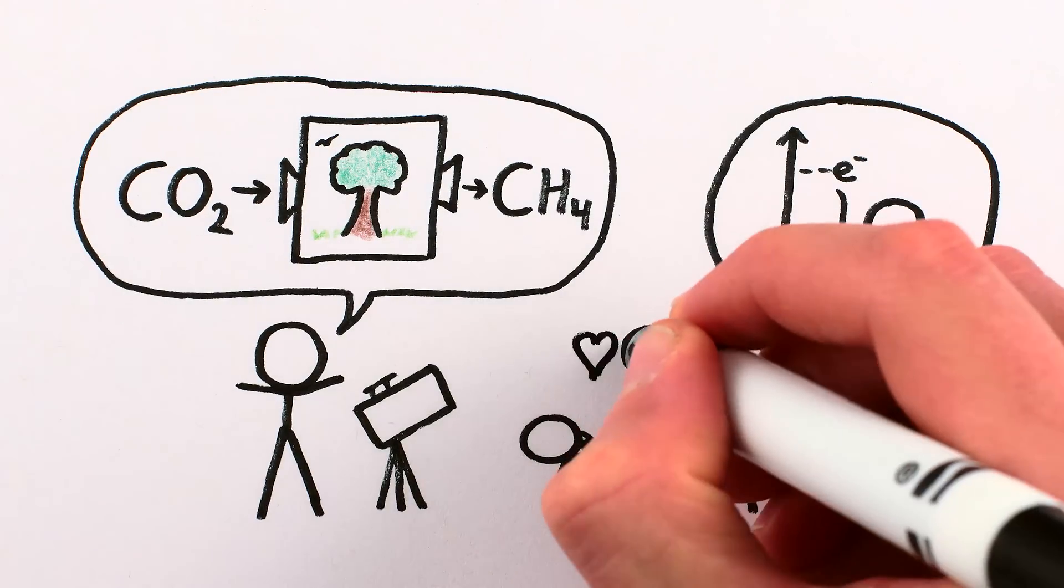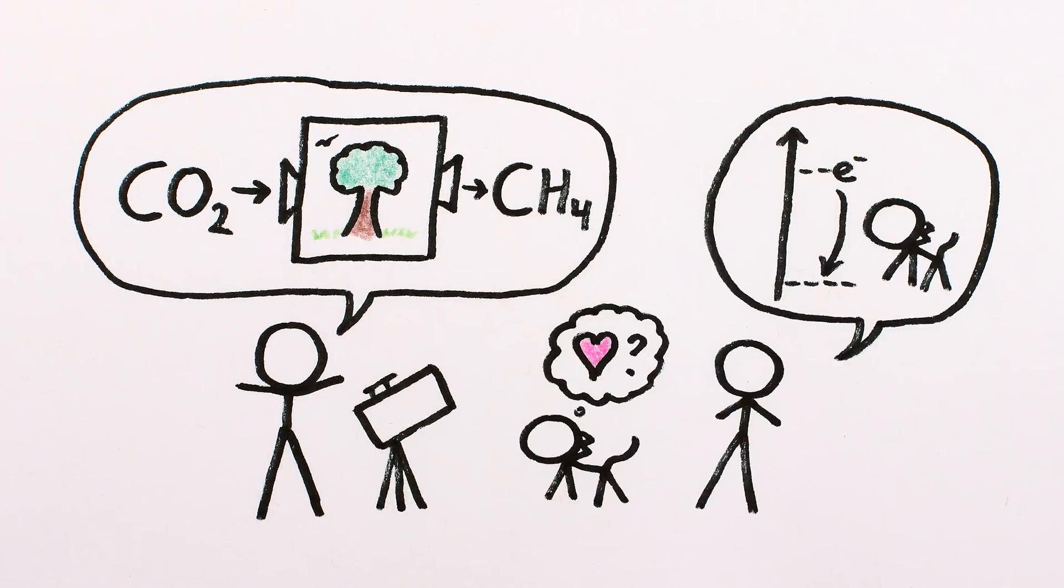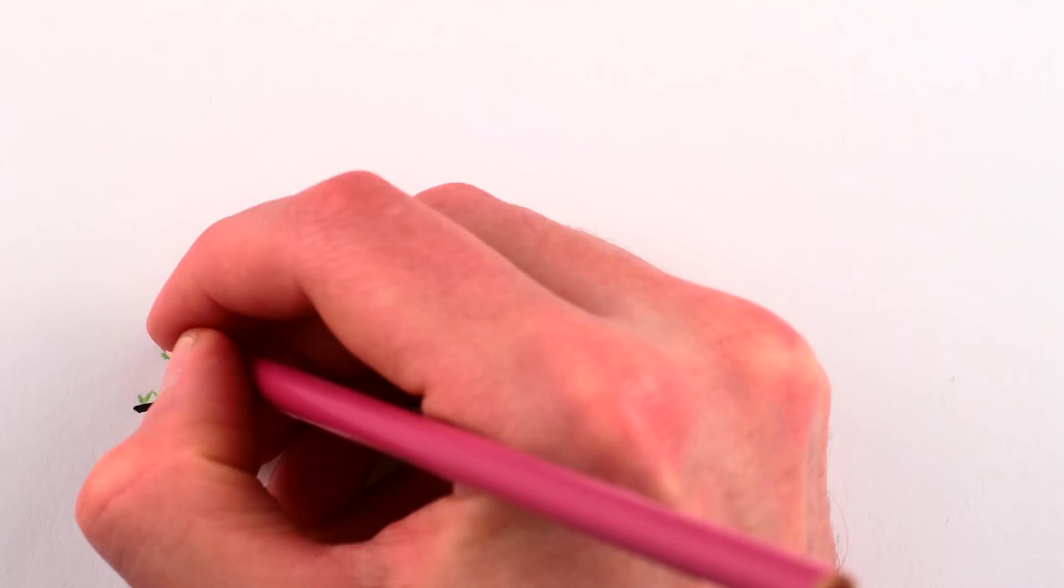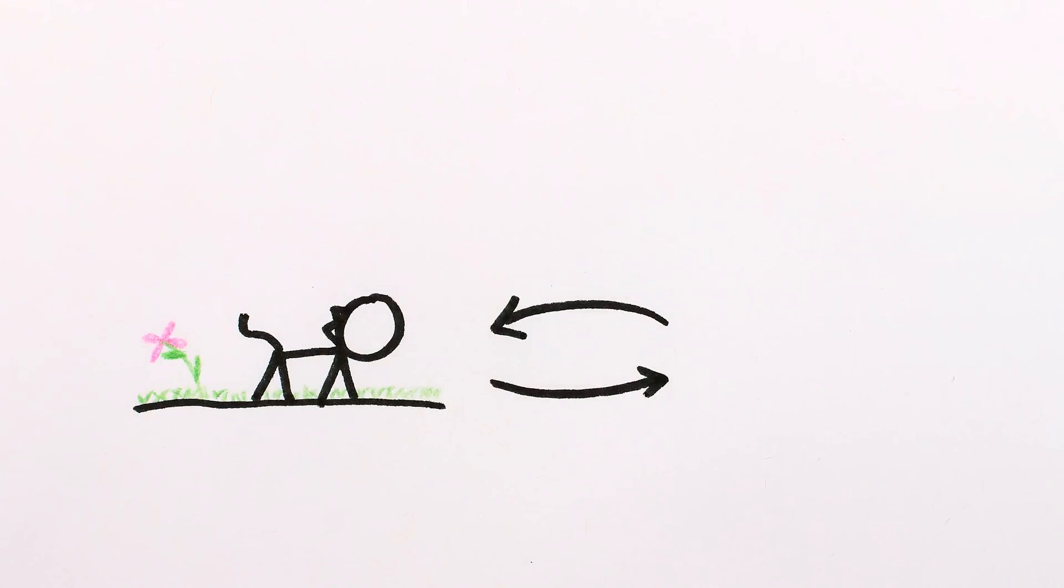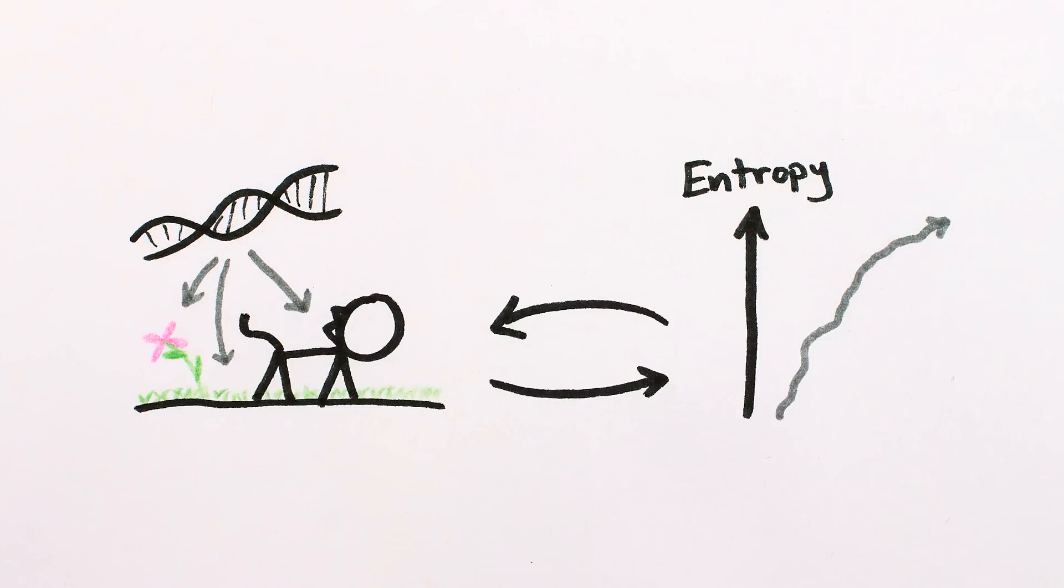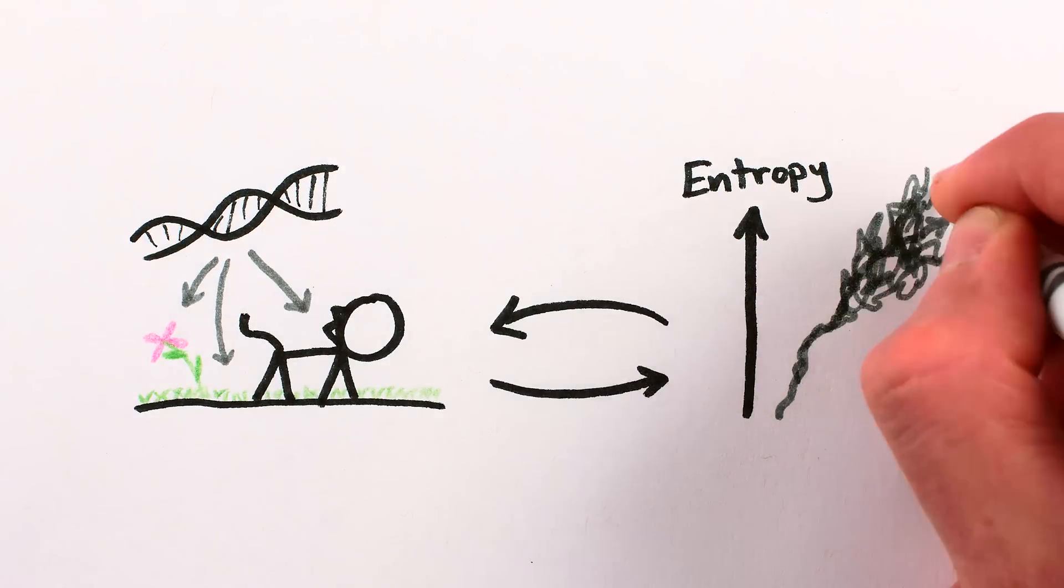While these aphorisms might not capture the meaning of life that most of us look for, their point is that living organisms ultimately depend on and facilitate the universe's tendency to increase entropy. That may seem counterintuitive, since living beings are themselves highly organized, while entropy is a measure of disorder.